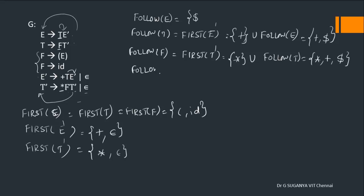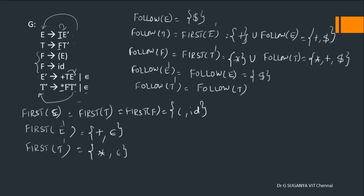FOLLOW of E': E' appears in two places and in both cases it is not followed by any symbol. So add FOLLOW of its parent E. FOLLOW of E' = FOLLOW of E = {$}. FOLLOW of T': T' also appears in two positions not followed by any symbol. Its parent is T, so add FOLLOW of T = {+, $}.